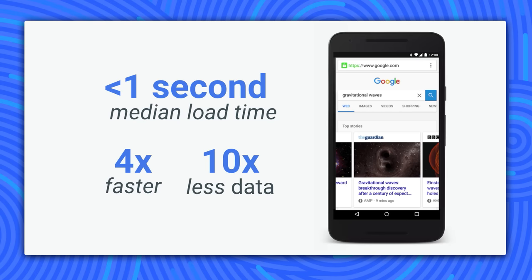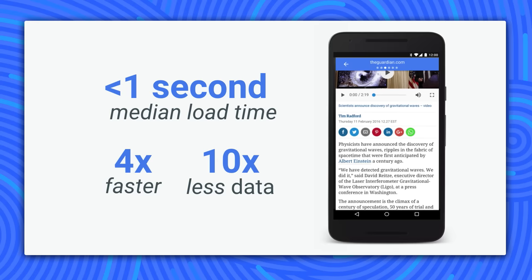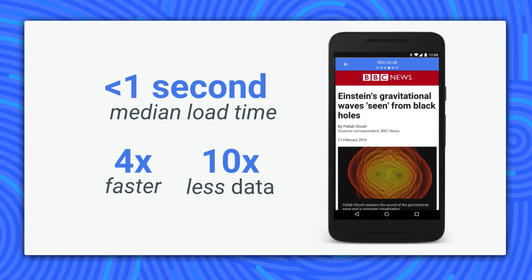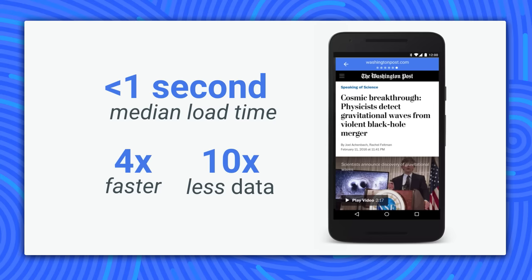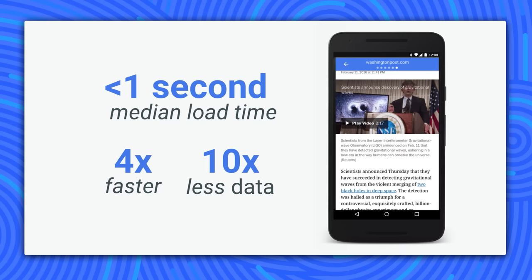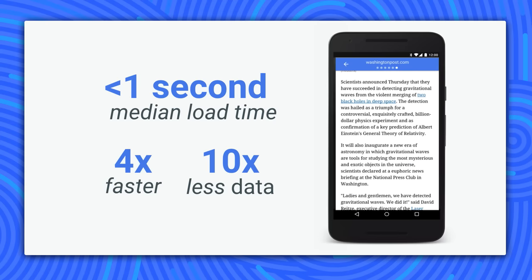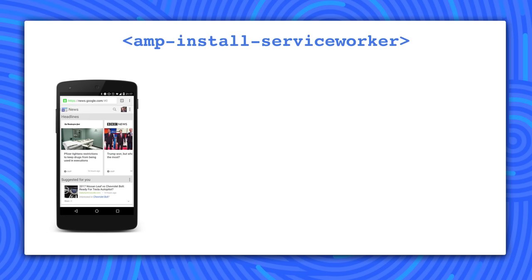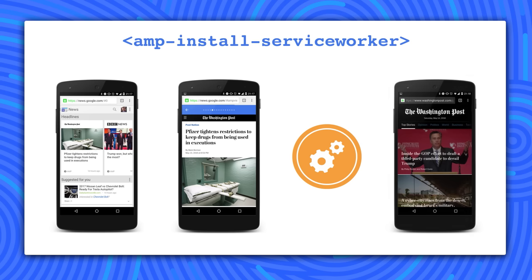That's huge. But what about the first visit? The AMP project from the Google search team aims to address the web obesity epidemic. AMP provides reliably fast web components for first load. These AMP components are much faster to load and less data-hungry than non-AMP content. But what if you could combine the two — fast first load with reliable performance subsequently? We can do that by combining AMP and service worker.